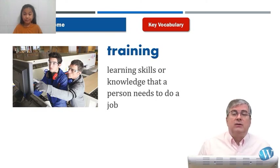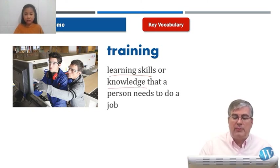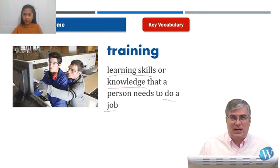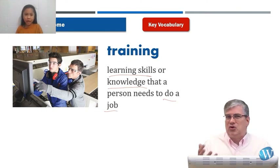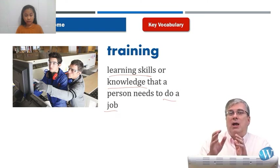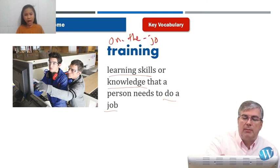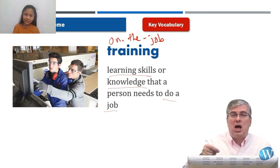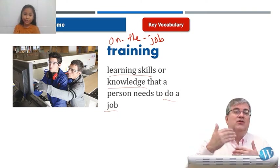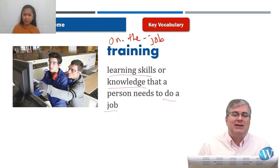Our next word is training. Training is when you learn skills or knowledge that you need to perform jobs — to do the jobs, to work the jobs. Training can be many different types. You can train from a book, but many people consider training as actually doing the things you need to do at jobs. Sometimes people call it on-the-job training. On-the-job training means learning how to do a job while you're working. When you start a new job, maybe an older or more experienced person will show you how to do that job. That's called on-the-job training.